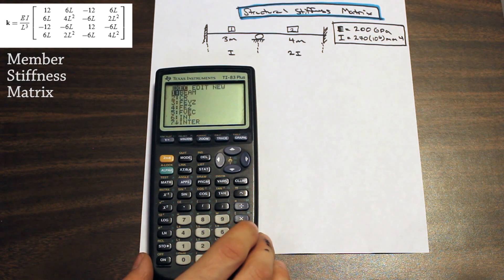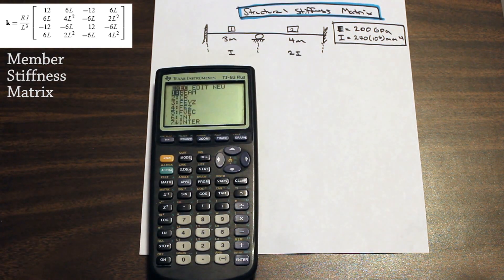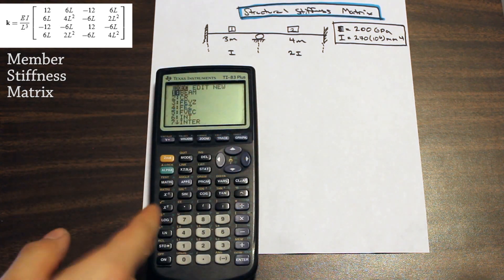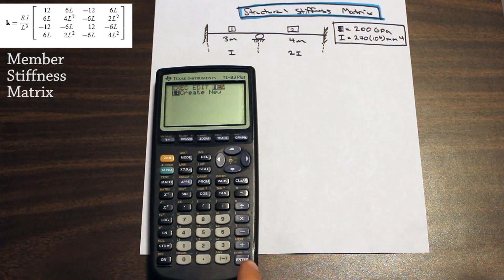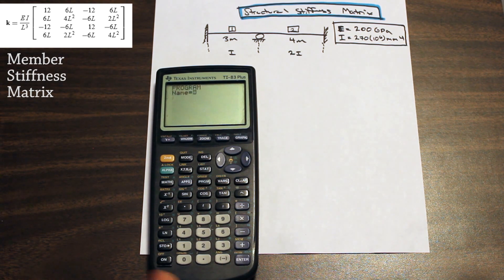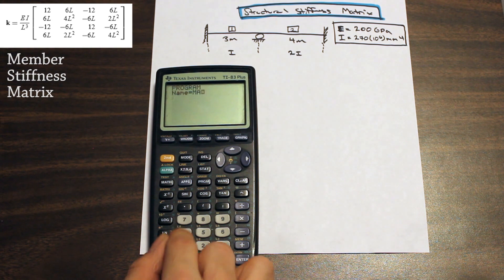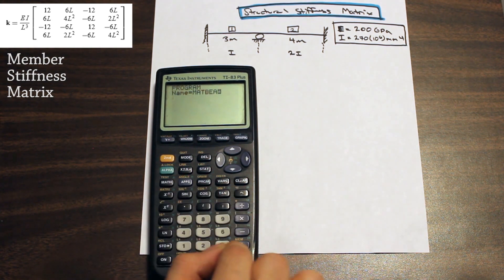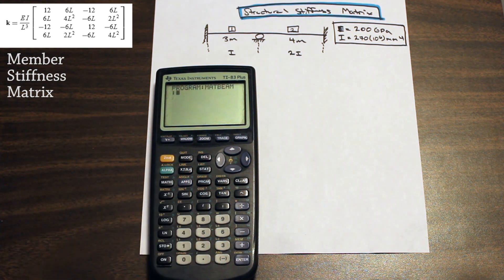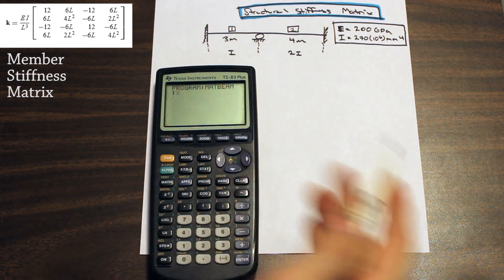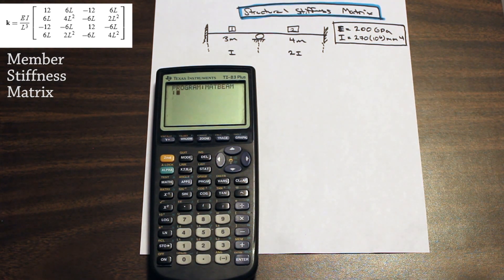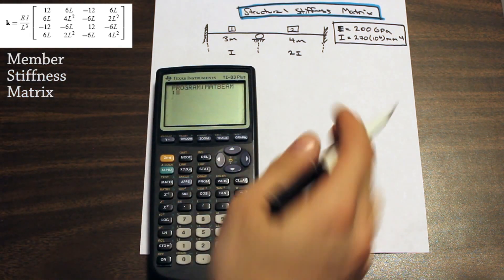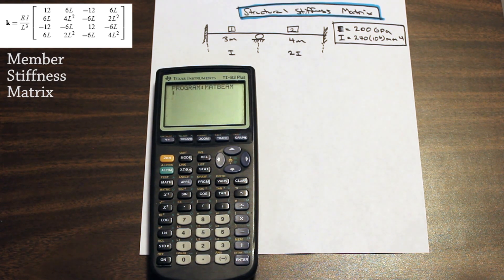I'm going to go a little bit faster in this one. If you don't know the basics of programming, go back to the video I did on interpolation — I explained the basics there. We want to make a program that will calculate the structural stiffness matrix for the beam. Let's call it Matt Beam. I suggest that when you go to the exam — which will probably be open book — write down the letter it's stored in and what matrix it corresponds to on paper, so you're not confused.